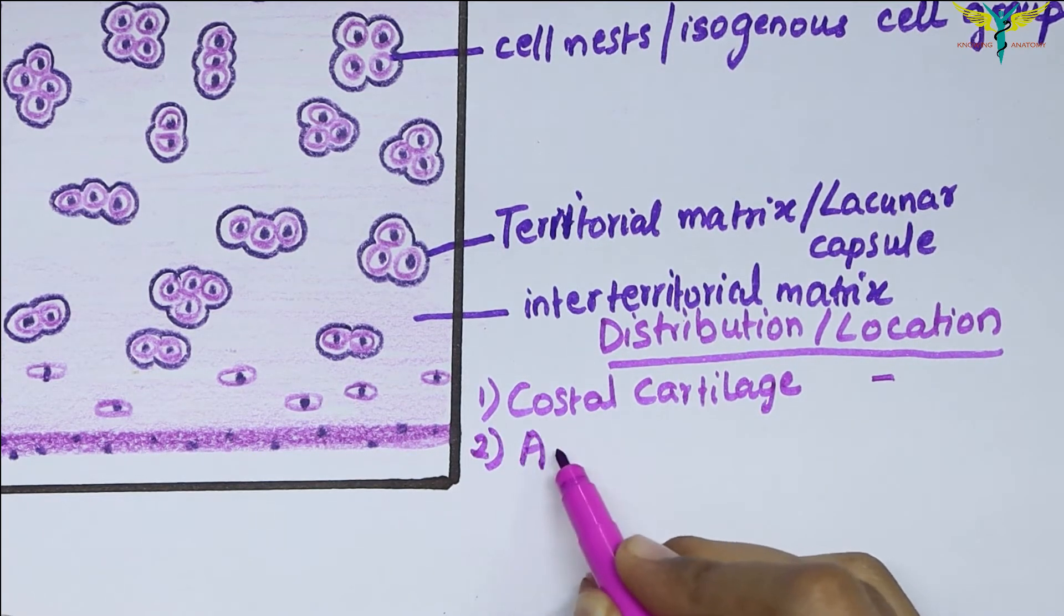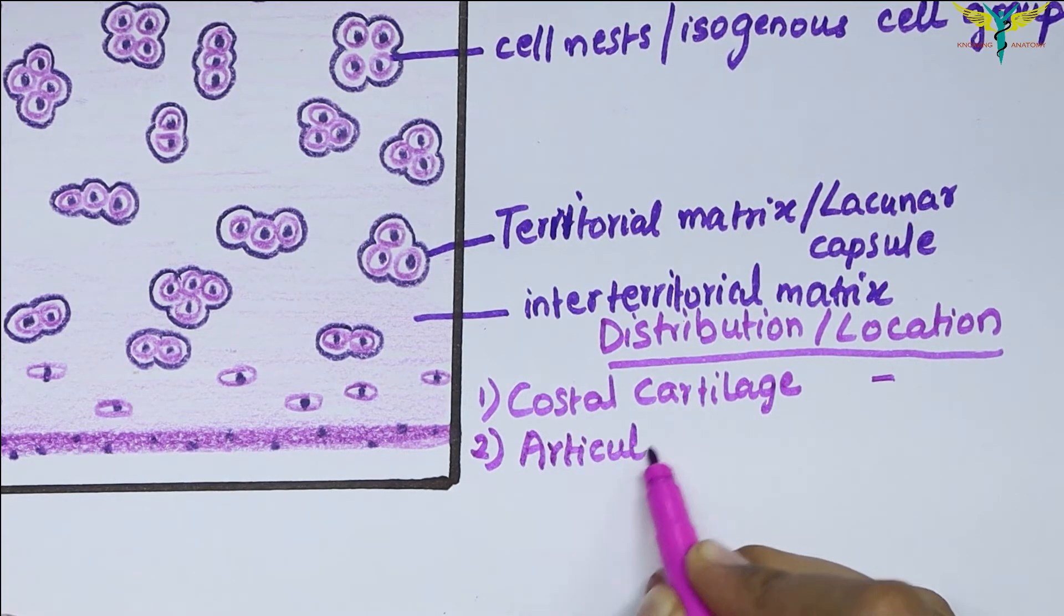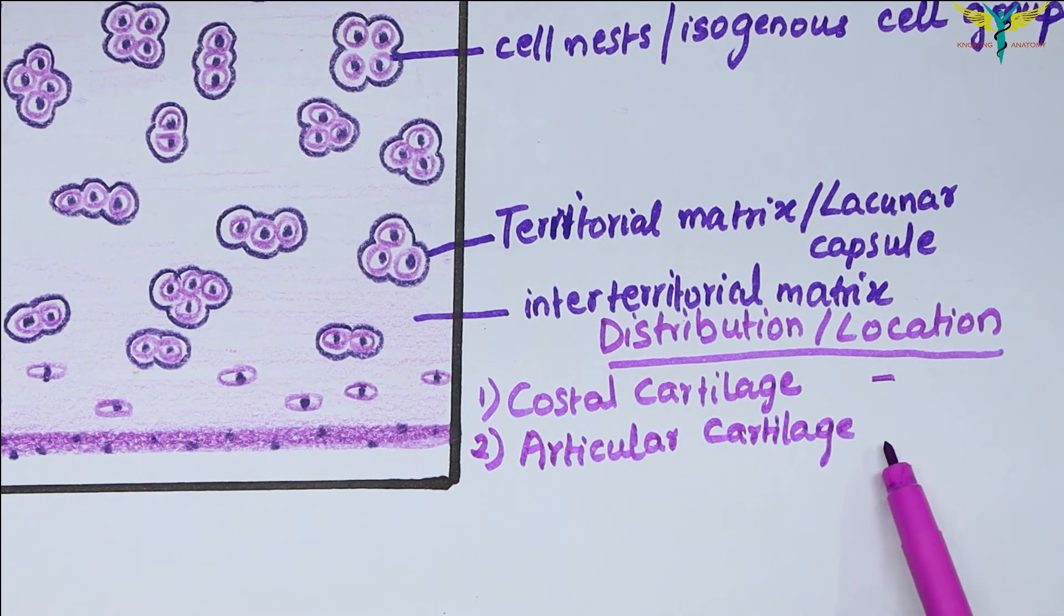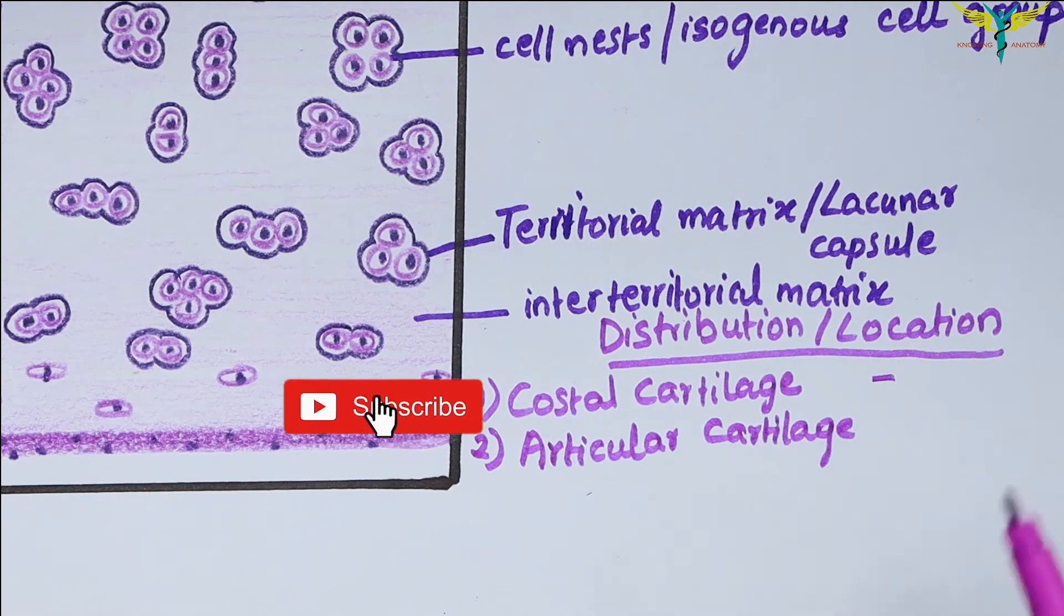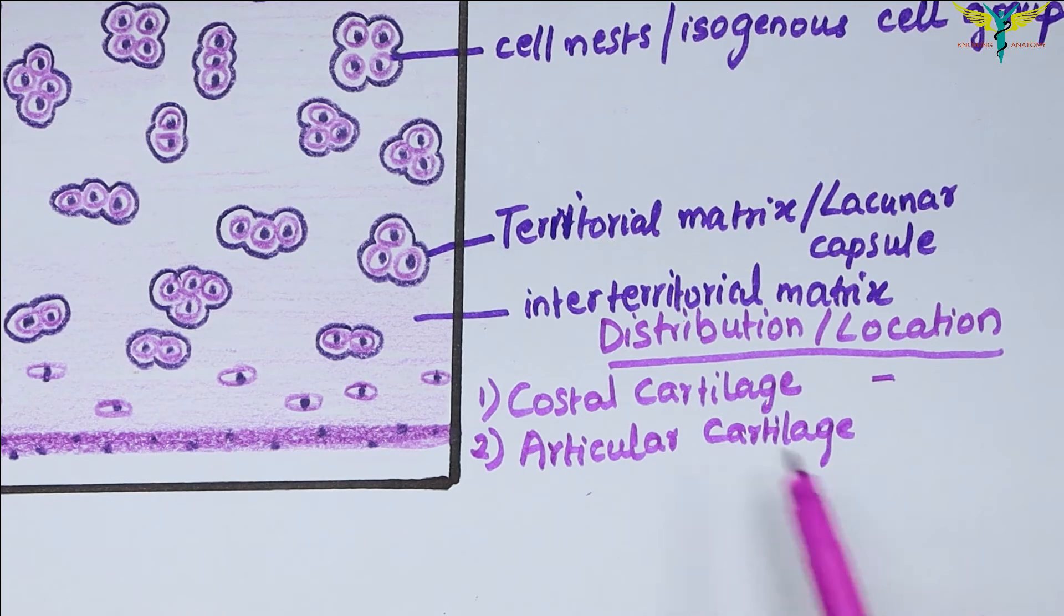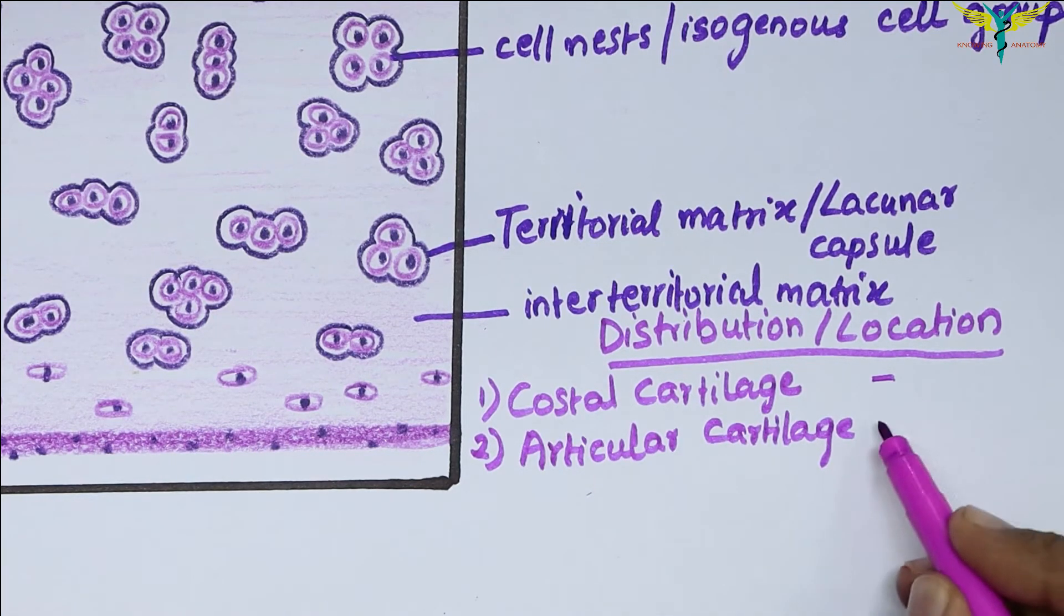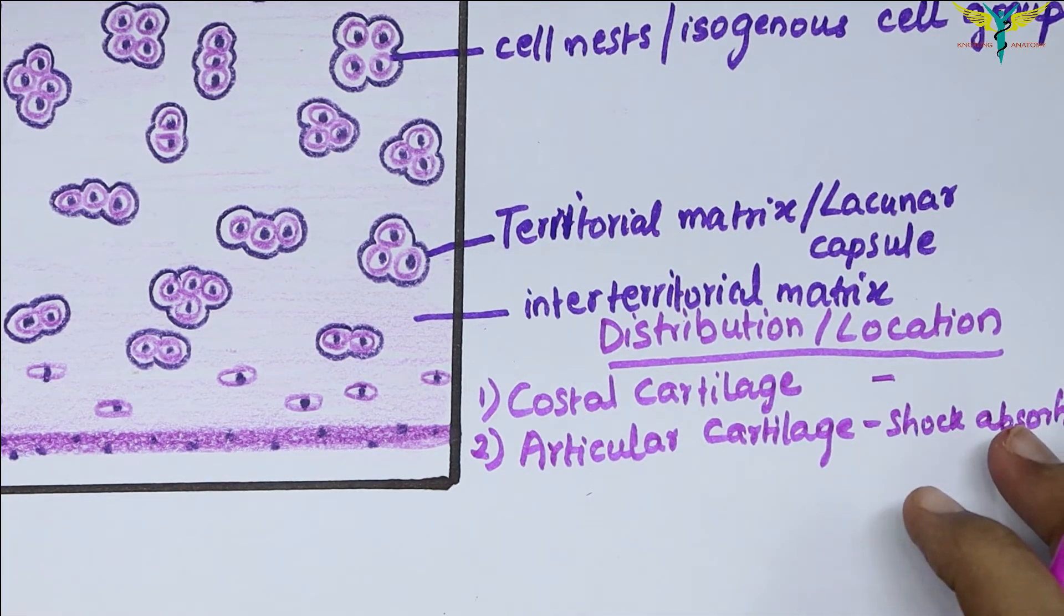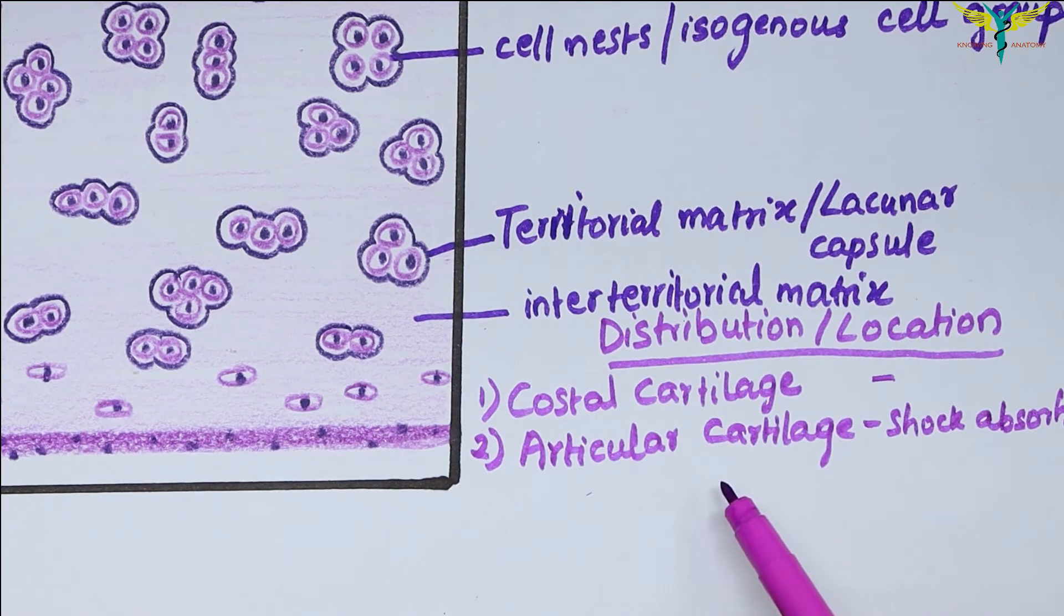The hyaline cartilage is also present in the articular cartilage, meaning the articular surfaces of most synovial joints are lined by hyaline cartilage. These articular cartilages provide the bone ends with smooth surfaces where there is very little friction, and act as shock absorbers. You should remember the articular cartilage is not covered by the perichondrium, and their surface is always kept moist by the synovial fluid that also provides nutrition to this cartilage.